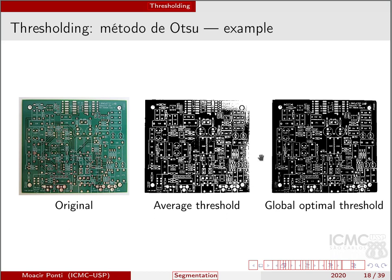Let us revisit the circuit board example. The first attempt used an average threshold — I computed the mean value of the intensities and used that as the threshold — which produced poor results. When we use the OTSU method, also called the Global Optimal Threshold, we achieve a much better result despite illumination changes in the image. The average threshold likely failed because the top right part of the image is brighter than the bottom left.